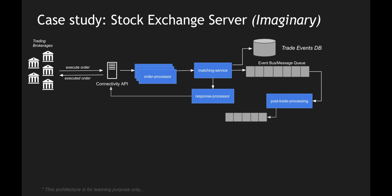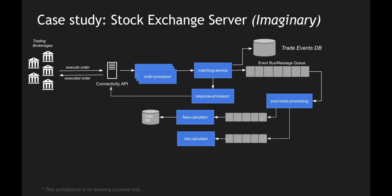The post-trade processing service will consume these messages and process them. It splits the messages based on the type of business or domain. The first message is pushed into a fees calculator which will calculate the fees based on the trades executed, and these fees are persisted into a fees database. It also publishes a message into another Kafka topic for a risk calculator, which calculates risk specific to the executed trade and persists it into a risk database.